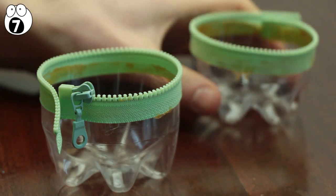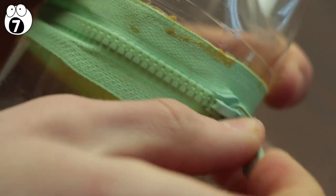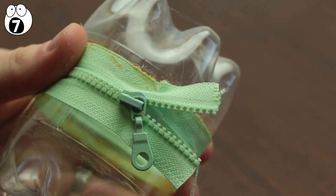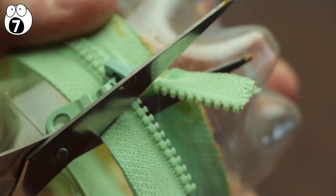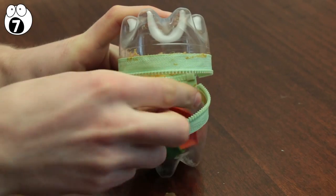Once you've got the ends looking like this, simply attach the ends together and zip them up. Afterwards, you'll probably have some remaining material, so just cut this off with a pair of scissors. And there you have it, a neat transparent storage container.